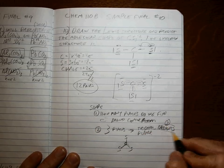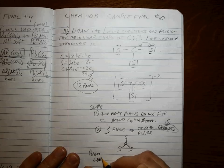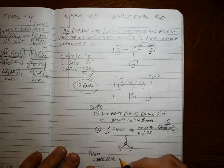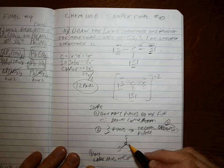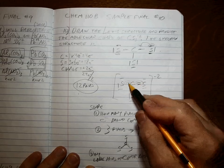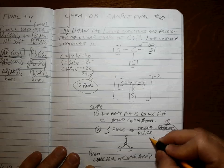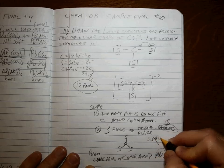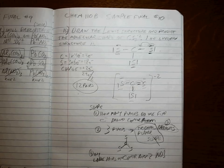Okay, so we found the arrangement. Now, any lone pairs? On the center atom? No. No lone pairs. Just a double bond and two single bonds. Which means that's the shape as well. Okay? Trigonal planar shape.